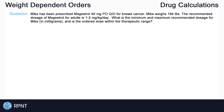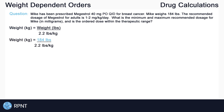The first thing we want to do in these kinds of questions is make sure the patient's weight is in the right unit — in this case kilograms — because the recommended dose is in milligrams per kilogram per day and the weight we have is in pounds. To do that, we divide 184 pounds by 2.2 pounds per kilogram, which gives us 83.636 kilograms.